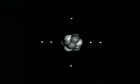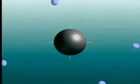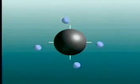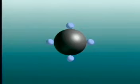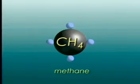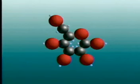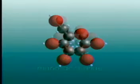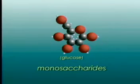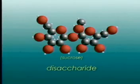A carbon atom has four bonding sites. For example, it can bond with hydrogen atoms to make CH4, methane gas, and with other carbons to form long chains in which the carbon atoms fill in their other bonding sites with hydrogens and oxygens.